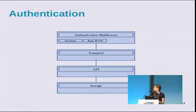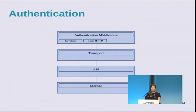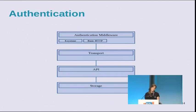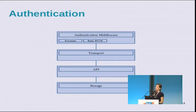On top of the transport layer we have the authentication middleware, which is provided by a third party. Currently we support two authentication methods: Keystone and basic HTTP. With Keystone you get all the multi-tenancy features it already allows, so you can use multiple tenants and multiple projects under the same Marconi deployment at the same time. Obviously, if you want to, you can write your own authentication method as a plugin for Marconi.